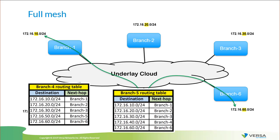From the routing table, it will look like this. From the branch 4 perspective, if we want to reach the network 172.16.10.0/24, we will go to branch 1 directly and build that tunnel directly to branch 1, and the same accordingly to the other branches. The same from the perspective of branch 5 — if we want to reach any other branch, we will go directly right away to that other branch. Full mesh topology is recommended for small deployments, for example up to 50 sites.